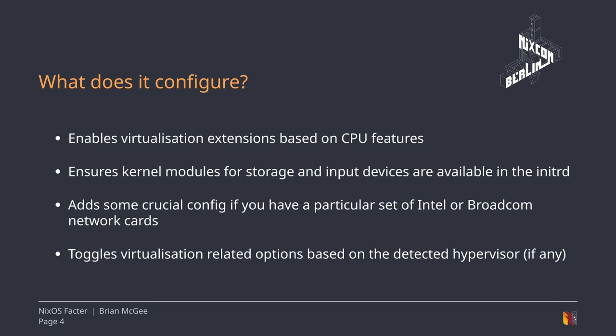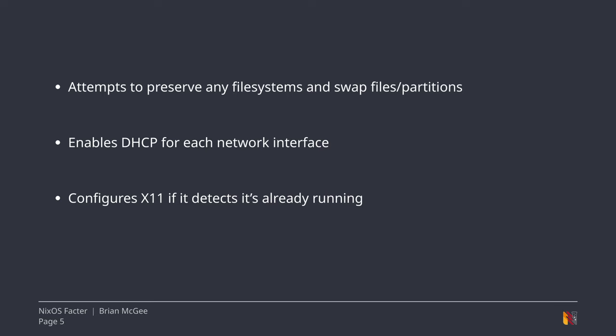It ensures your initrd has things like your USB controller so your keyboard will work when you're trying to unlock a disk. It adds some config depending on what kind of network card you might have. It toggles some virtualization optimizations, attempts to preserve any file systems or swaps it finds, enables DHCP for every network interface it finds, and configures X11 if it's already running. So it gets you started — though you're not supposed to modify your hardware-configuration.nix, but we all do it.